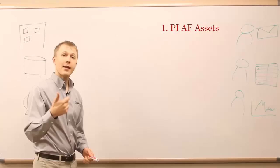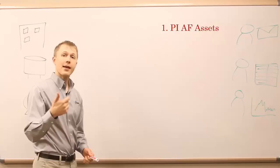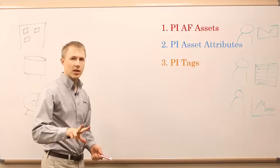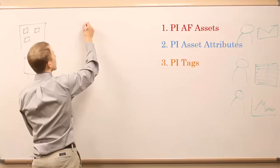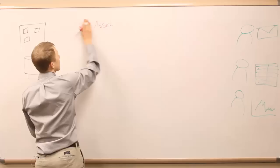That's going to be in three parts: there's PI Assets, PI Asset Attributes, and PI Tags. Those three things will be the building blocks for how we organize data in the PI system. So we're going to start off with PI Assets.